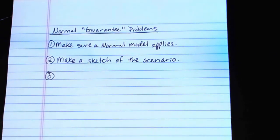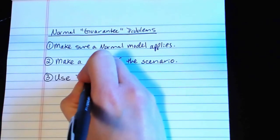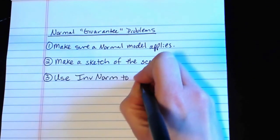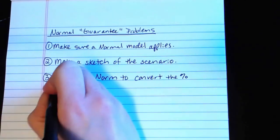Step three is we'll need to use something in the calculator called inverse normal, or INV norm, to convert the percentage into a z-score.